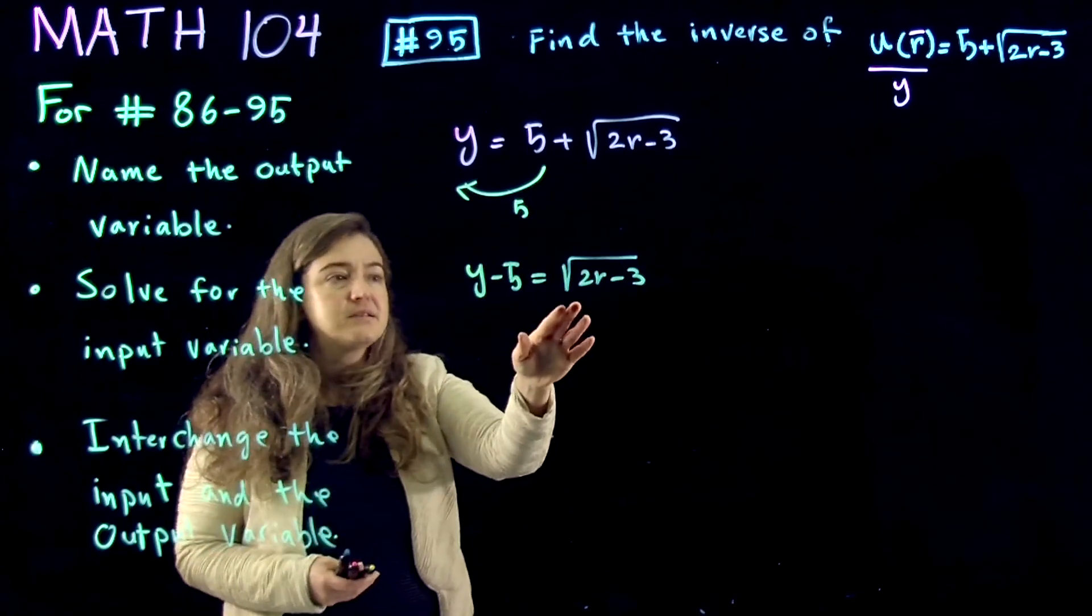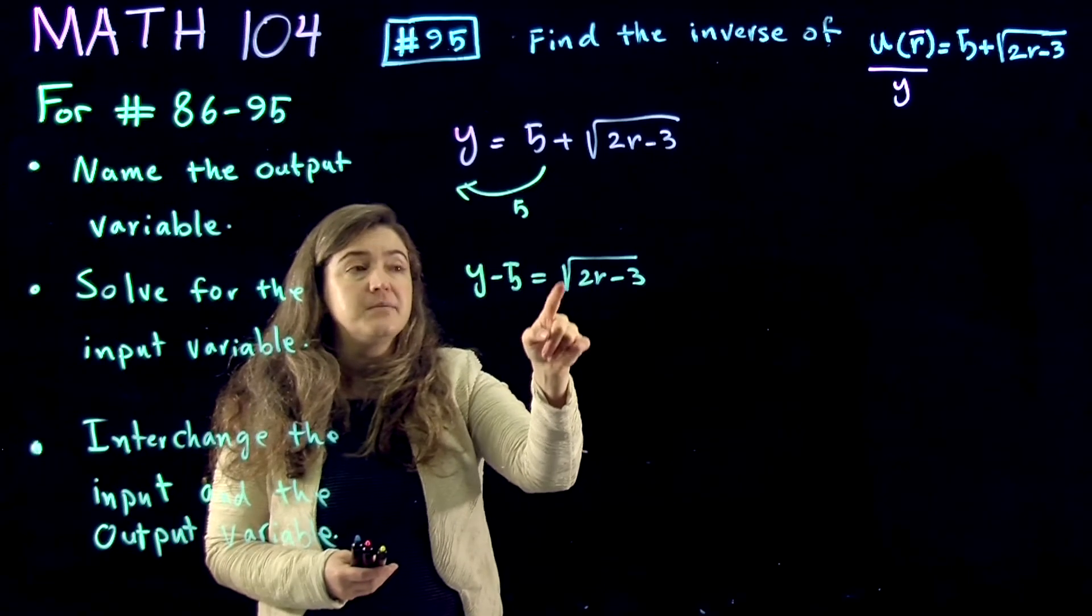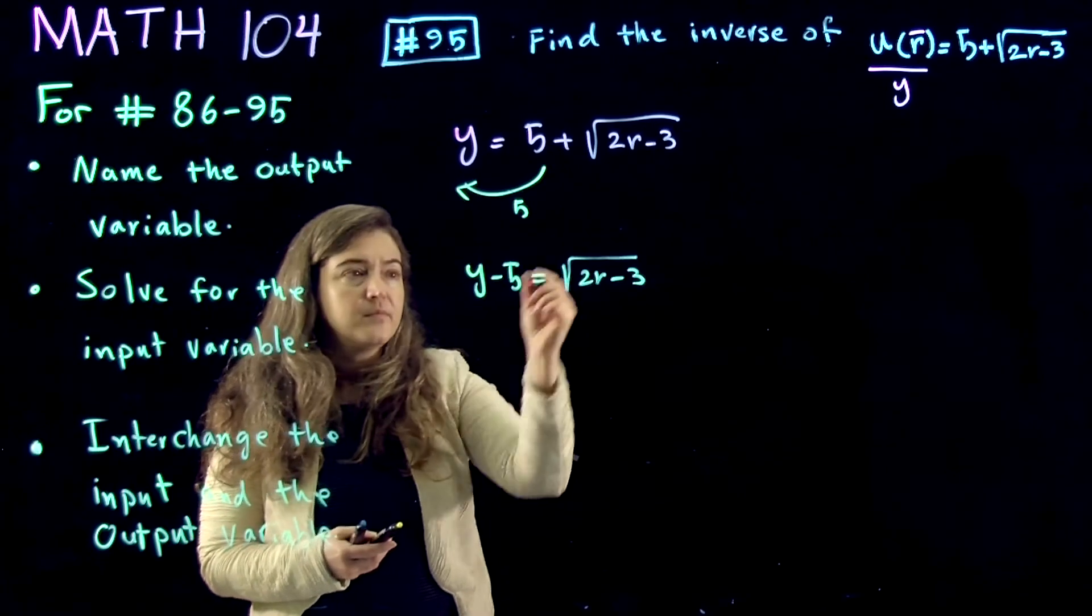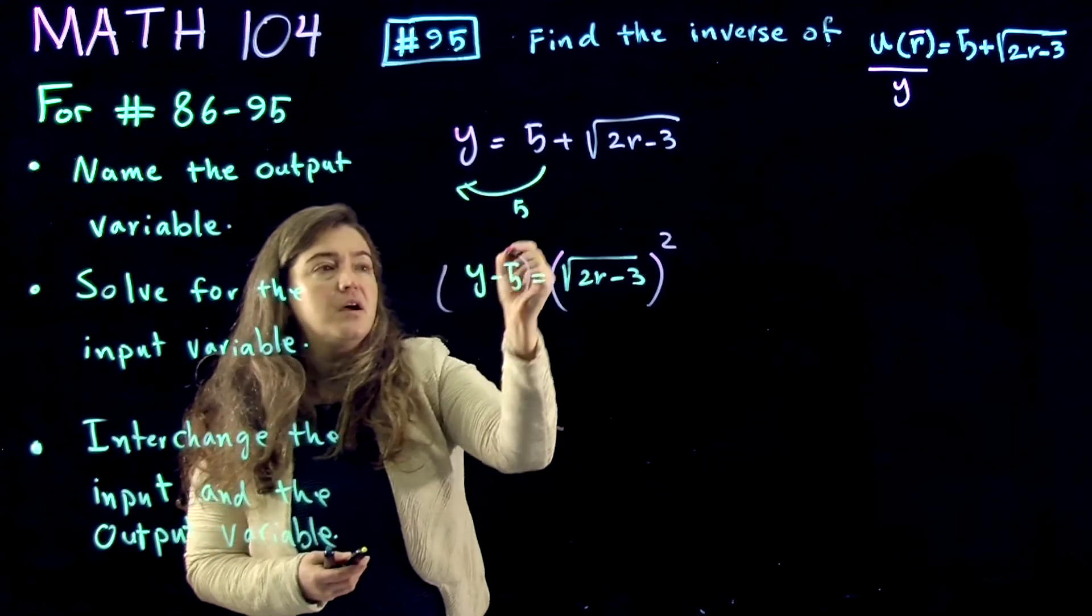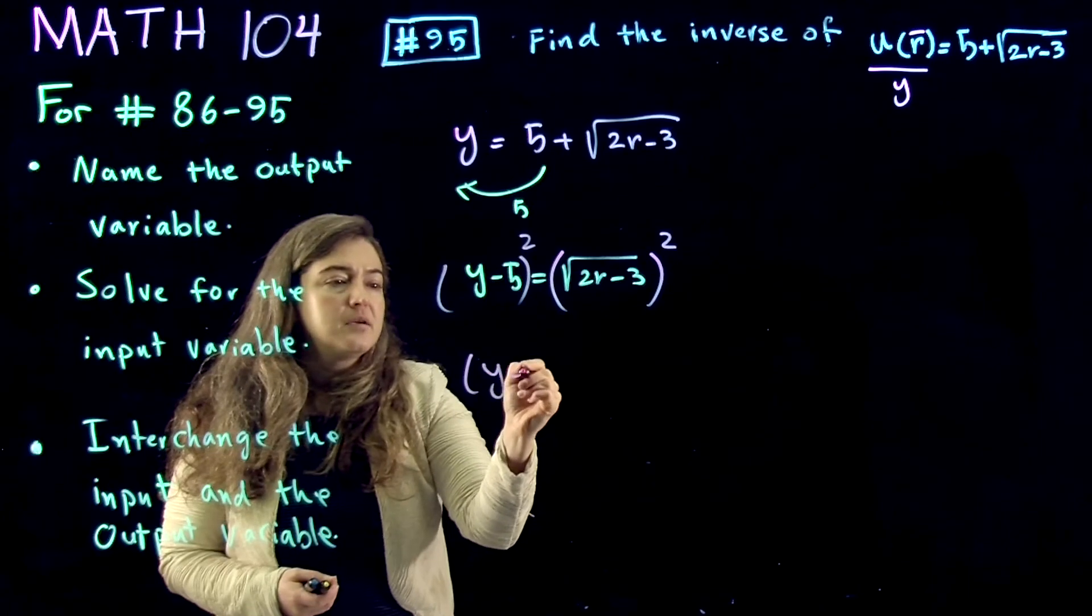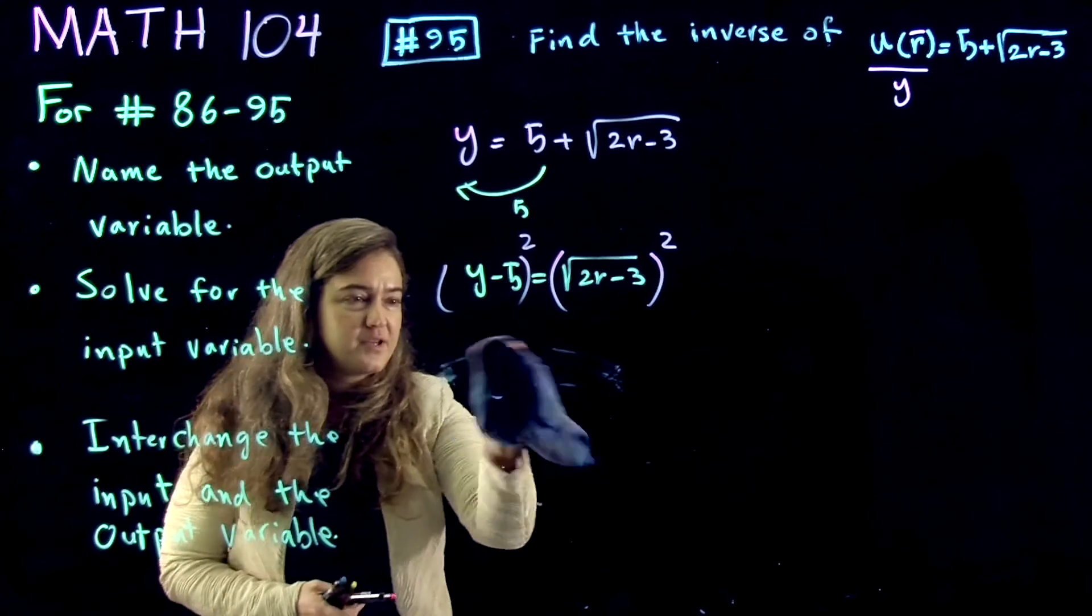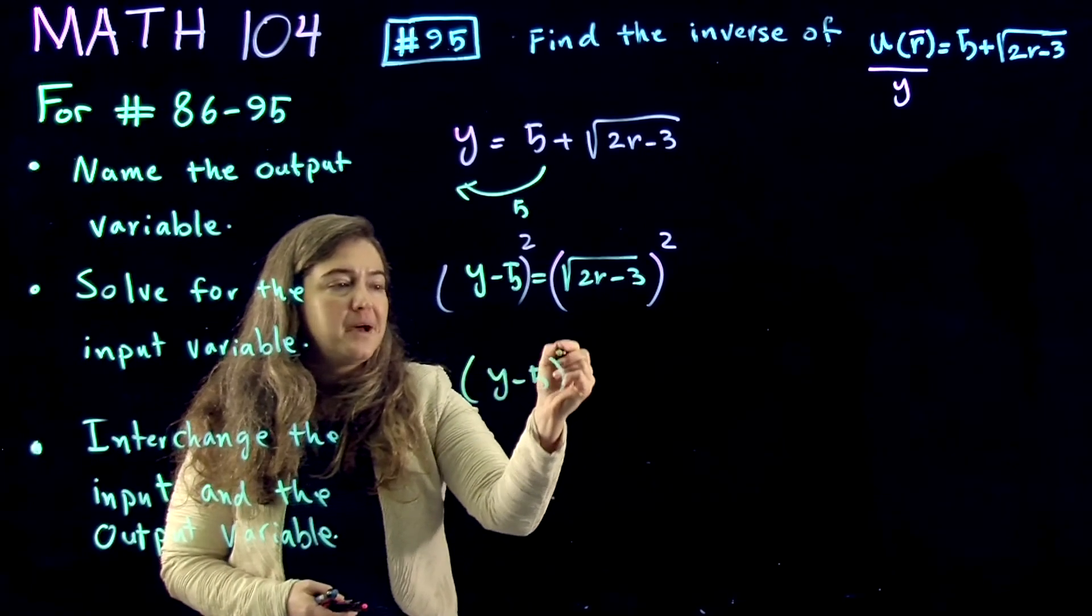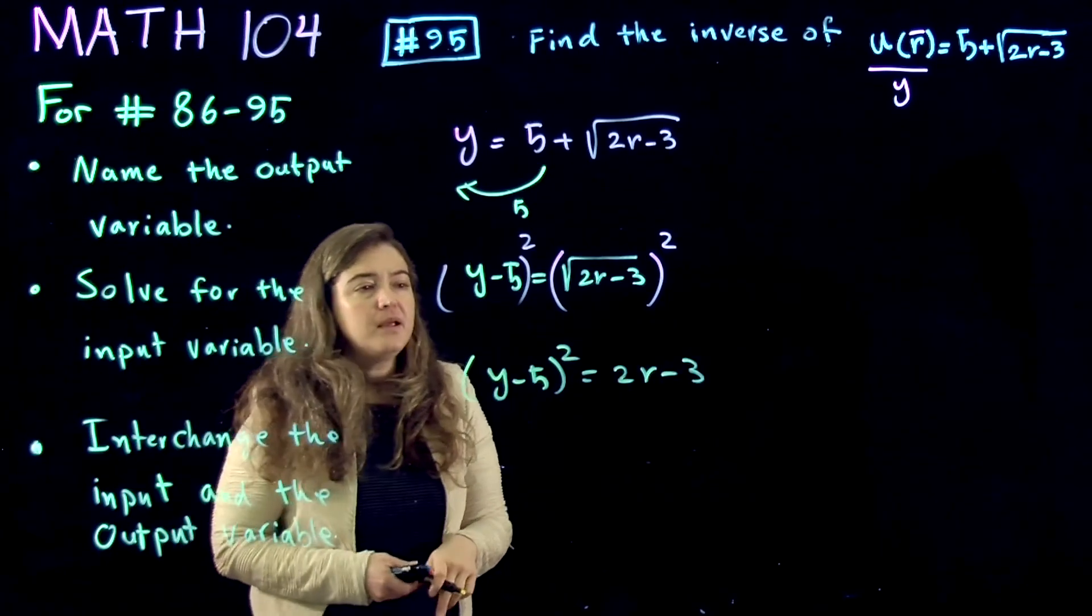The next step is, now I'm trying to get out of the radical so I can isolate r, so we square both sides, and what I get here is y minus 5 to the power of 2 is equal to 2r minus 3.